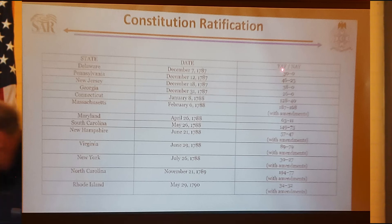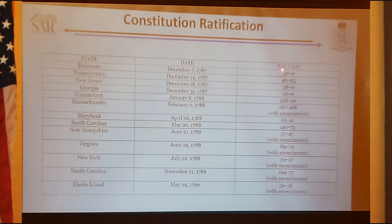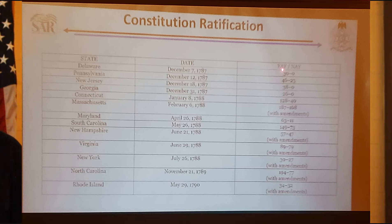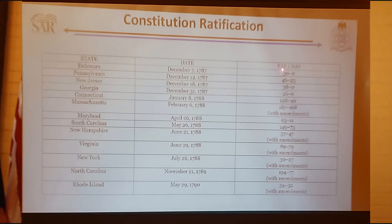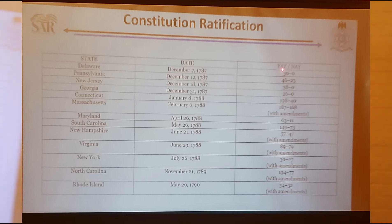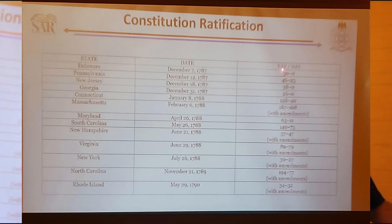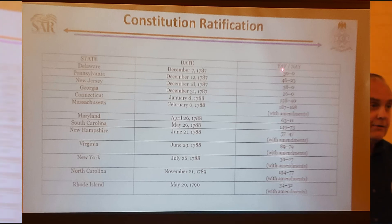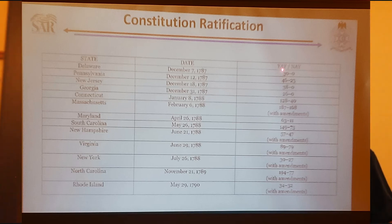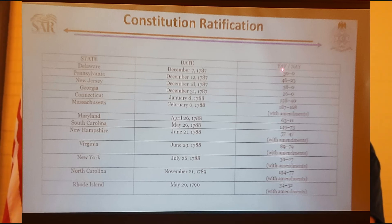The bottom of the ratification list was Rhode Island in 1790—almost two and a half years after they actually wrote the Constitution—by a vote of 34 to 32. That tells you right off that these states were not that excited about becoming part of a nation.